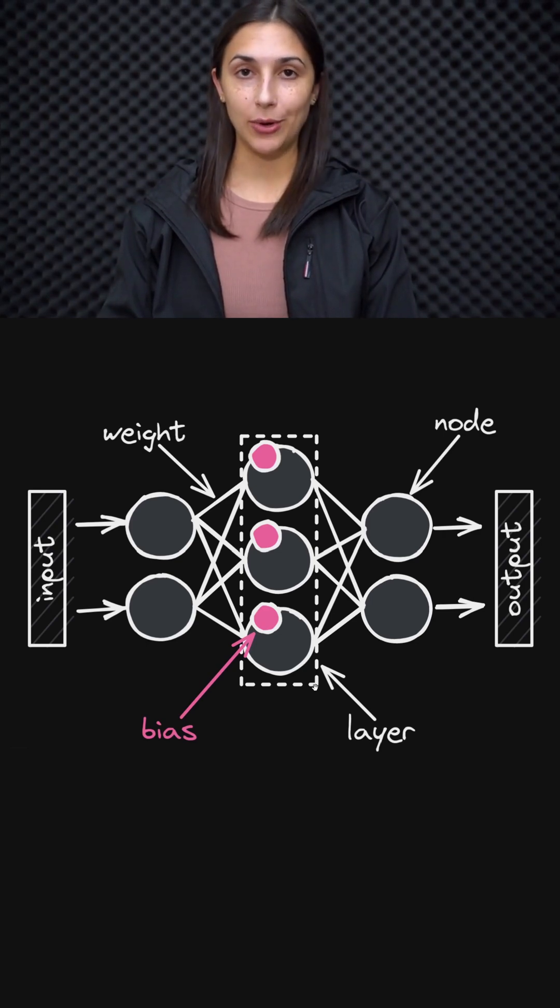And as such, we see popular neural network APIs like PyTorch and TensorFlow include bias terms for each layer in a network by default.